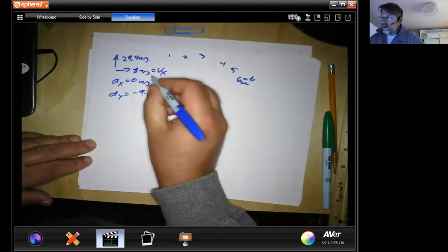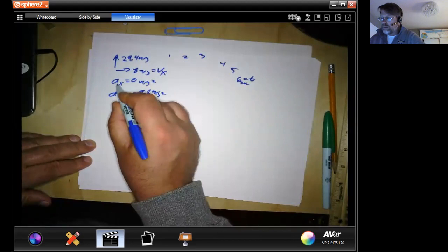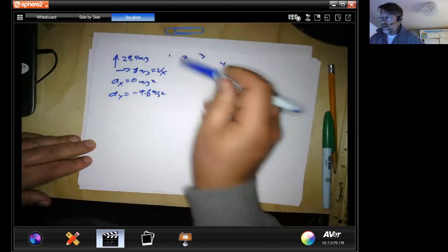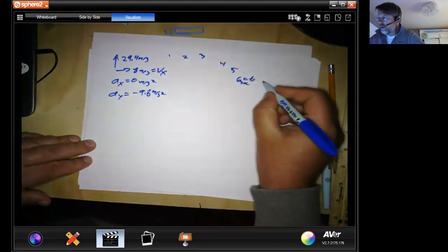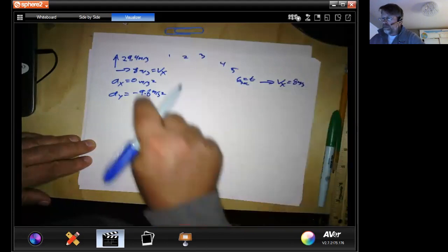So that makes, if our change in velocity is zero, then that means every single one of these has a velocity of x of eight. All right, because it never changes.